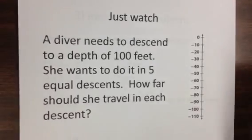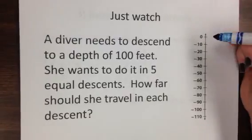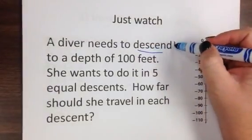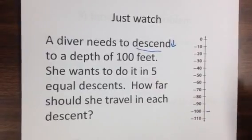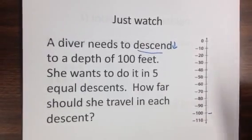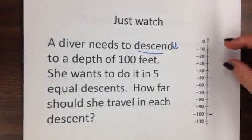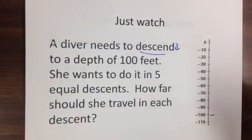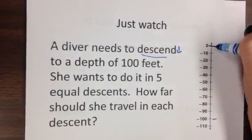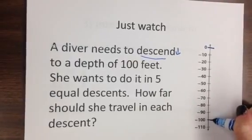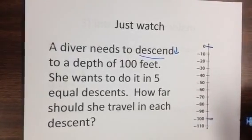Okay, this time just watch for a second. A diver needs to descend, which means decrease, to a depth of 100 feet. He wants to do it in five equal descents. That means in five equal parts, like he would dive down a little bit and then stop and then dive a little bit farther and stop. So he starts at zero and goes to 100 or to negative 100 in five descents.